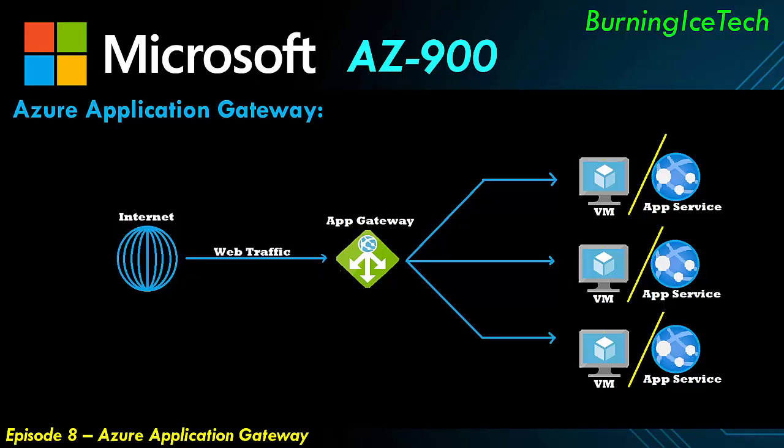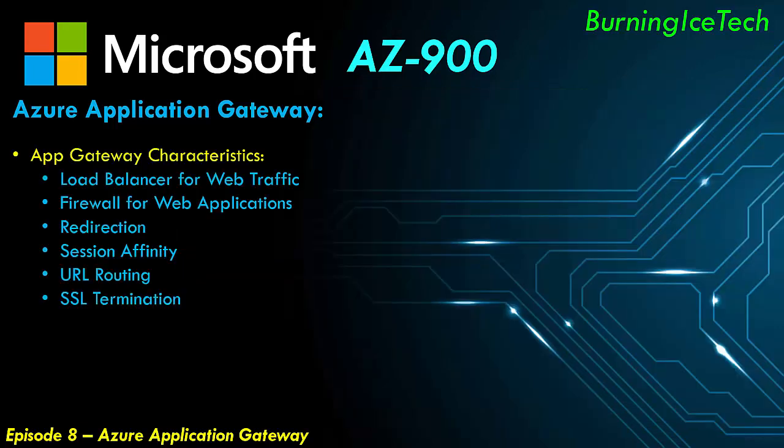Let's look at some of the benefits you get with the app gateway. You have a load balancer for web traffic — same as a normal load balancer, except specifically for web traffic. You get a web application firewall. You can do redirection — redirect traffic if need be. It has session affinity if you want users always directed to the same server. It has URL routing, and lastly SSL termination, which basically decrypts traffic, putting less strain on the back end and reducing scaling — which means lower costs.